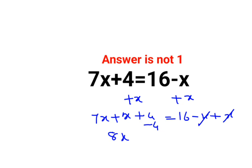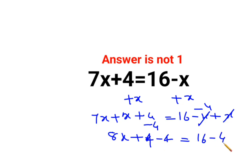Now we can shift the numbers to the other side, so we'll subtract 4 on both sides. We have 8x plus 4 minus 4 equals 16 minus 4, which gives us 8x equals 12.